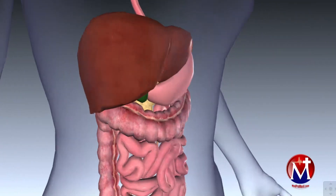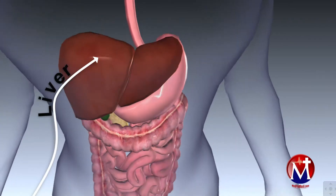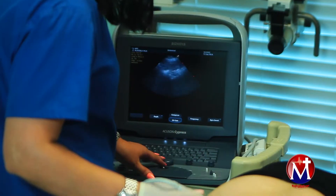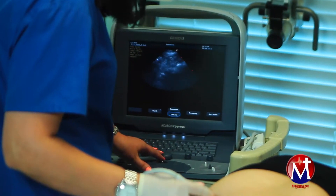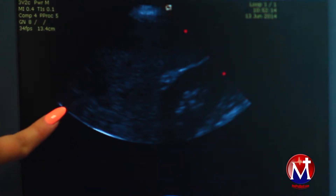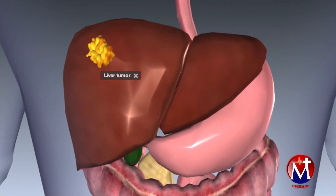Right now she is taking a picture of the liver. We use that to determine the size of the liver, its contours and its texture — to determine if there are any masses, bile duct obstruction, or any changes in the liver texture that could suggest underlying liver disease.